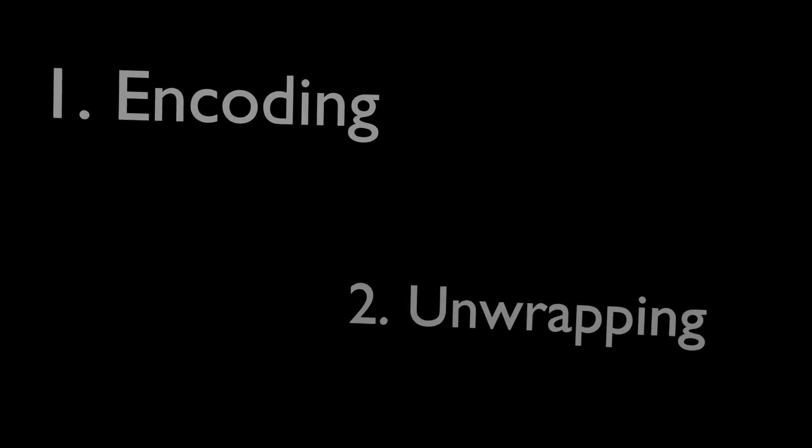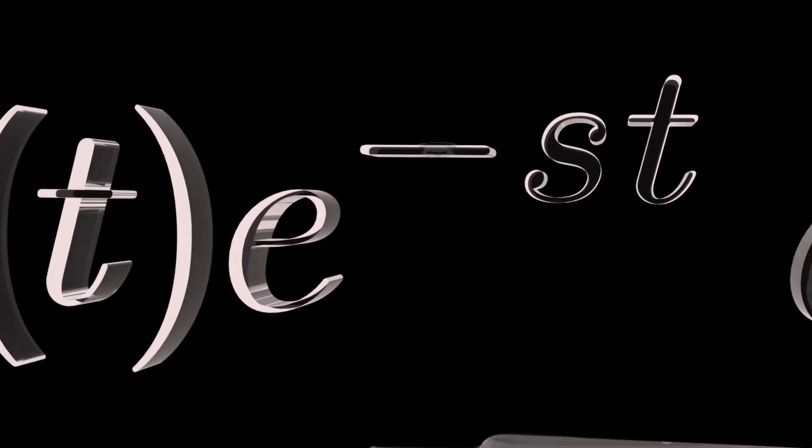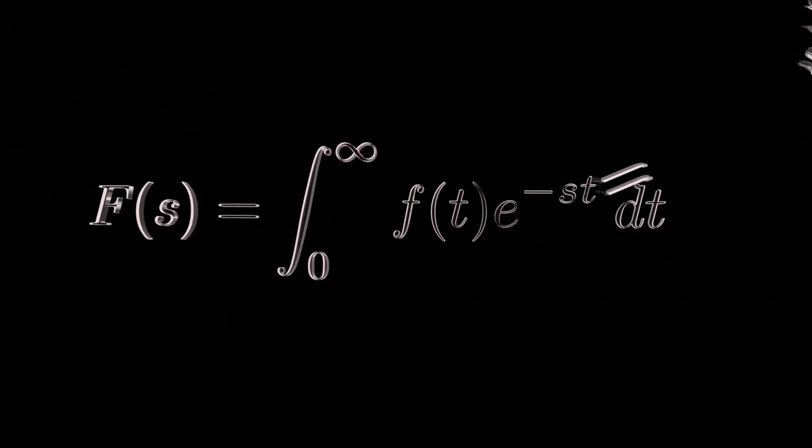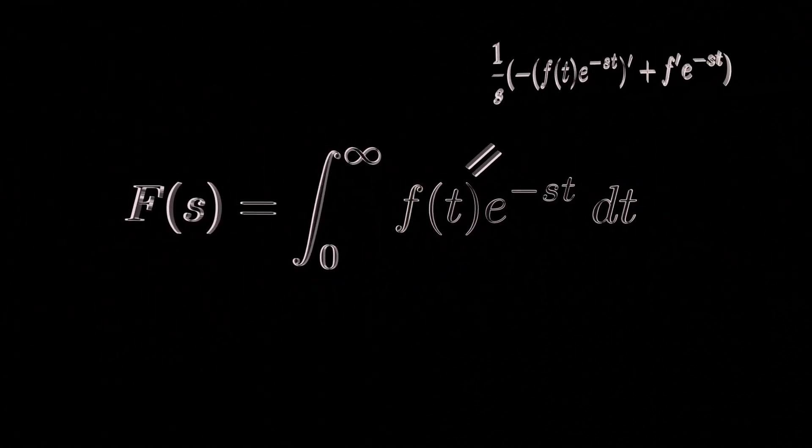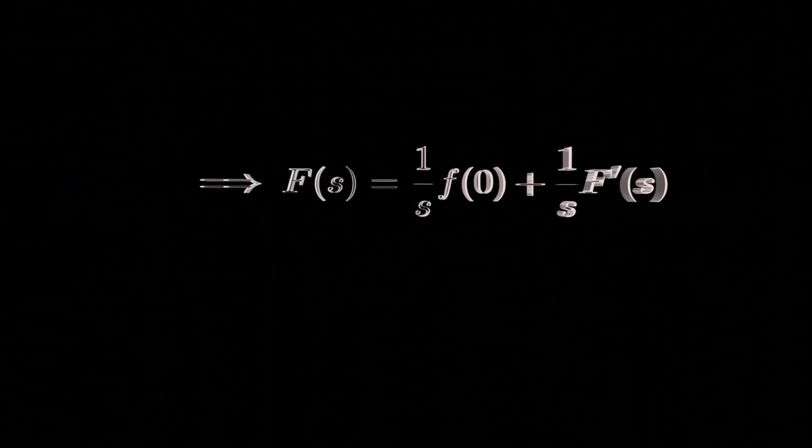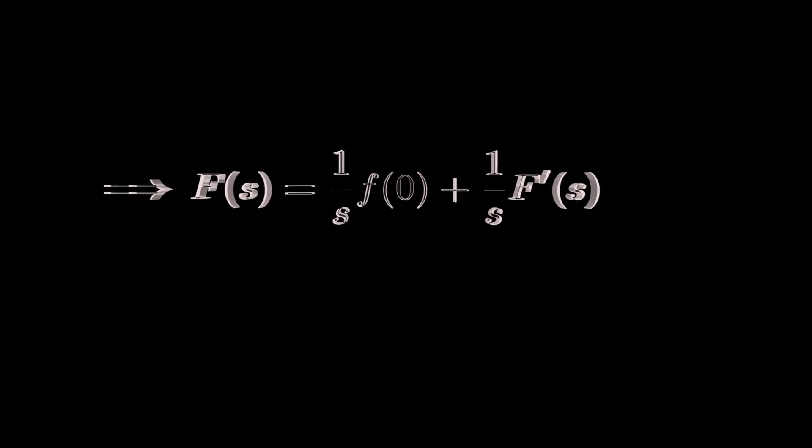So it's all based around two ideas: encoding and unwrapping. Having this exponential in the integral is what allows you to link the transform of the derivative of the function to the transform of the function because exponentials differentiate to themselves. And so you can do some fiddling or really integration by parts. And this is what allows engineers to turn differential equations into just algebra.